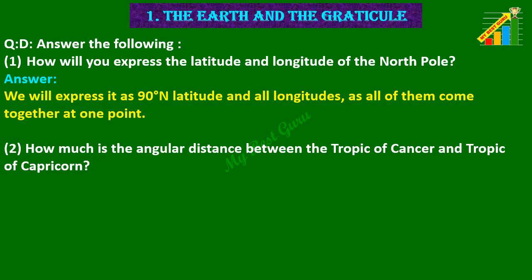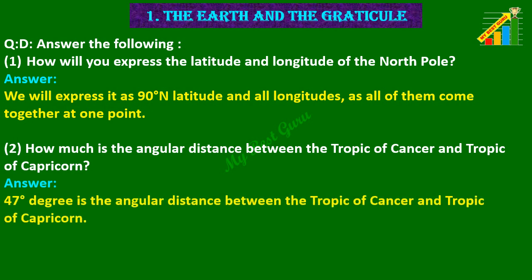2. How much is the angular distance between the Tropic of Cancer and Tropic of Capricorn? Answer: 47 degree is the angular distance between the Tropic of Cancer and Tropic of Capricorn.